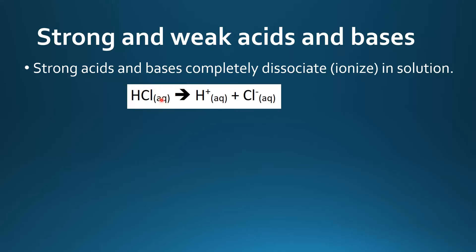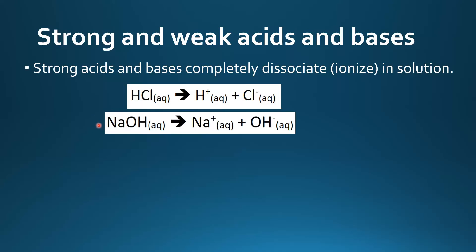Here's an example of a strong acid: this is hydrochloric acid and it dissociates into H+ and Cl- ions. Because it's a strong acid it dissociates completely, so if we have 1 mole of HCl it'll dissociate into 1 mole of H+ ions and 1 mole of Cl- ions.